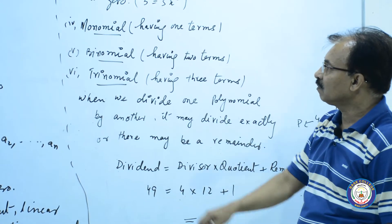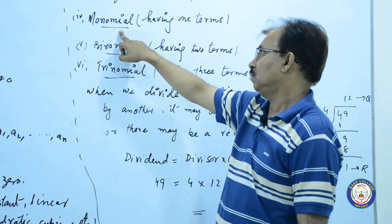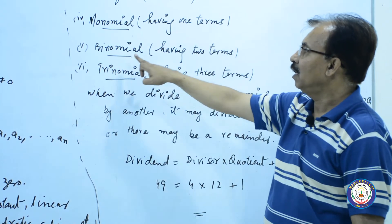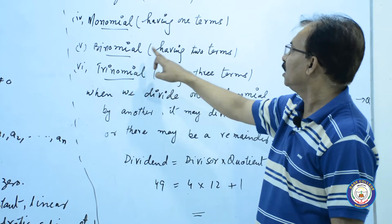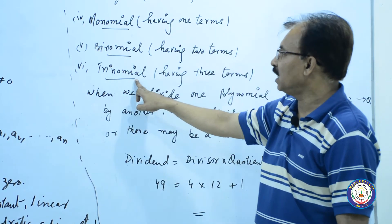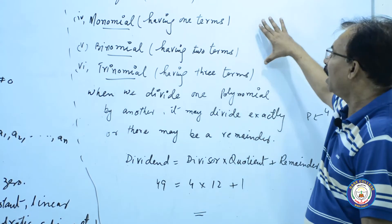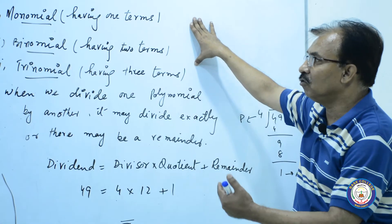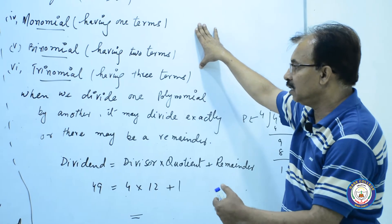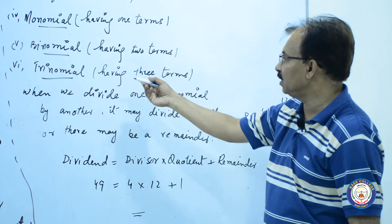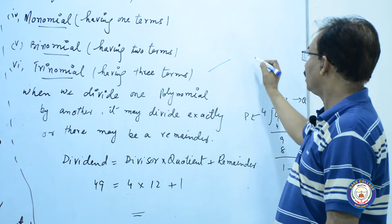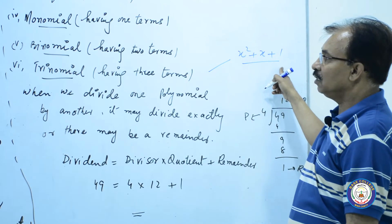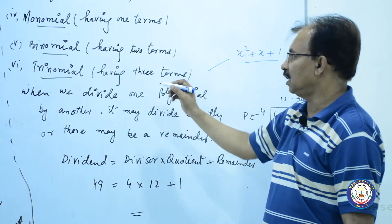اس کی کئی قسمیں ہیں: monomial جس میں one term ہوگی، binomial جس میں two terms ہوں گی، trinomial جس میں three terms ہوں گی۔ MCQ آ سکتا ہے کہ کوئی ایک expression دی گئی ہو اور آپ نے بتانا ہو کہ یہ کون سی type میں آئے گی۔ جیسے کوئی equation تین terms کے ساتھ لکھی ہے تو اس لحاظ سے یہ trinomial میں چلی جائے گی۔